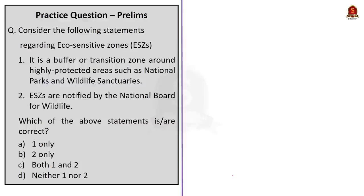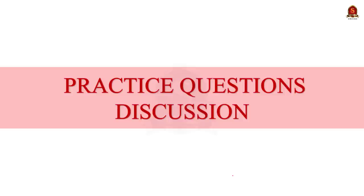In this news article discussion, we saw about eco-sensitive zones — their purpose is to create a buffer or shock absorber around protected areas by regulating activities around them, acting as a transition zone from high to lesser protection. Eco-sensitive zones are notified by the central government through the Ministry of Environment, Forest and Climate Change under the Environment Protection Act of 1986. Now let us move on to the preliminary practice questions.